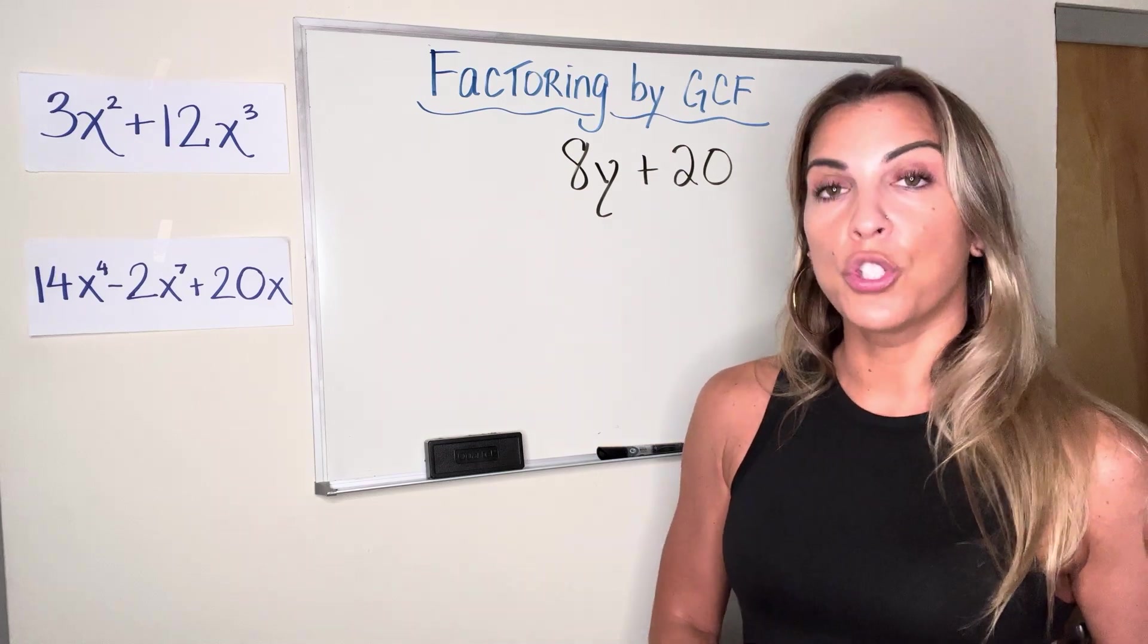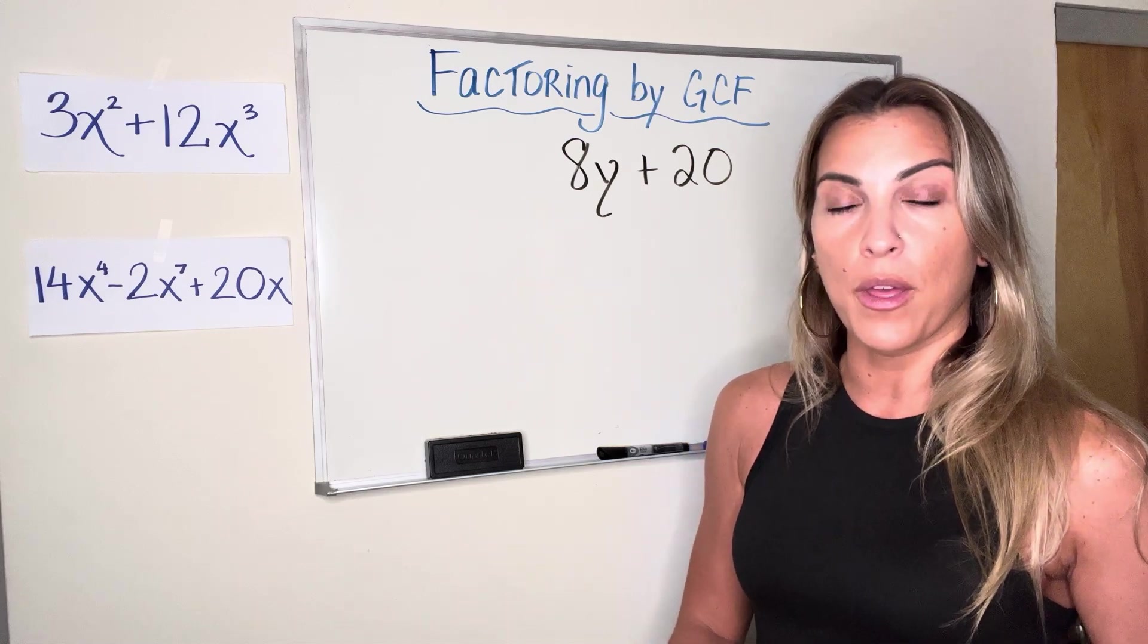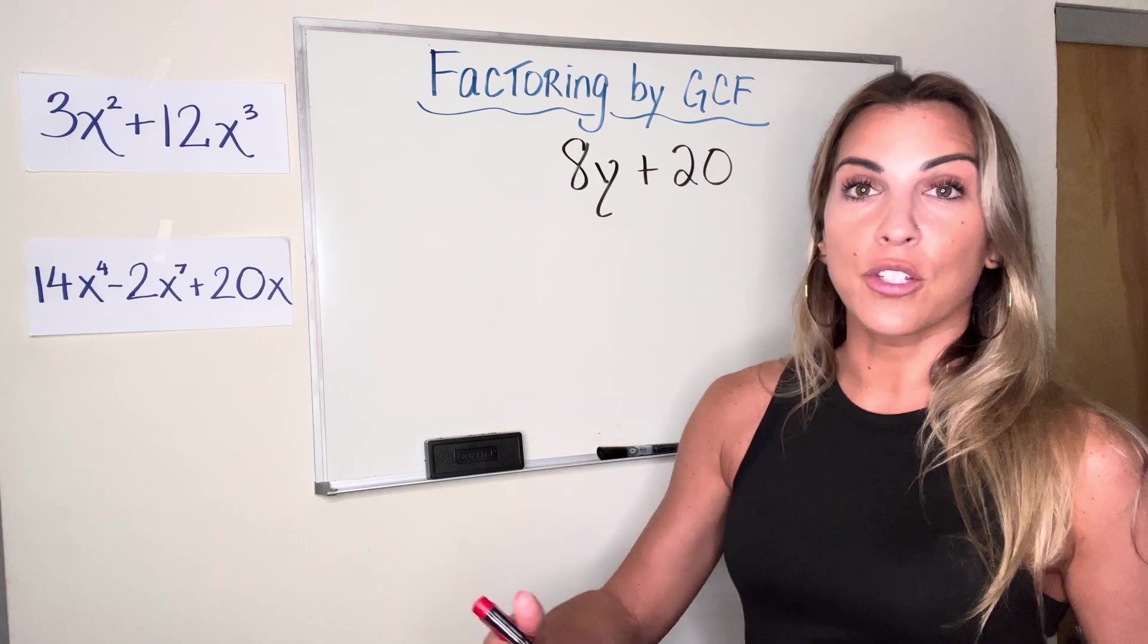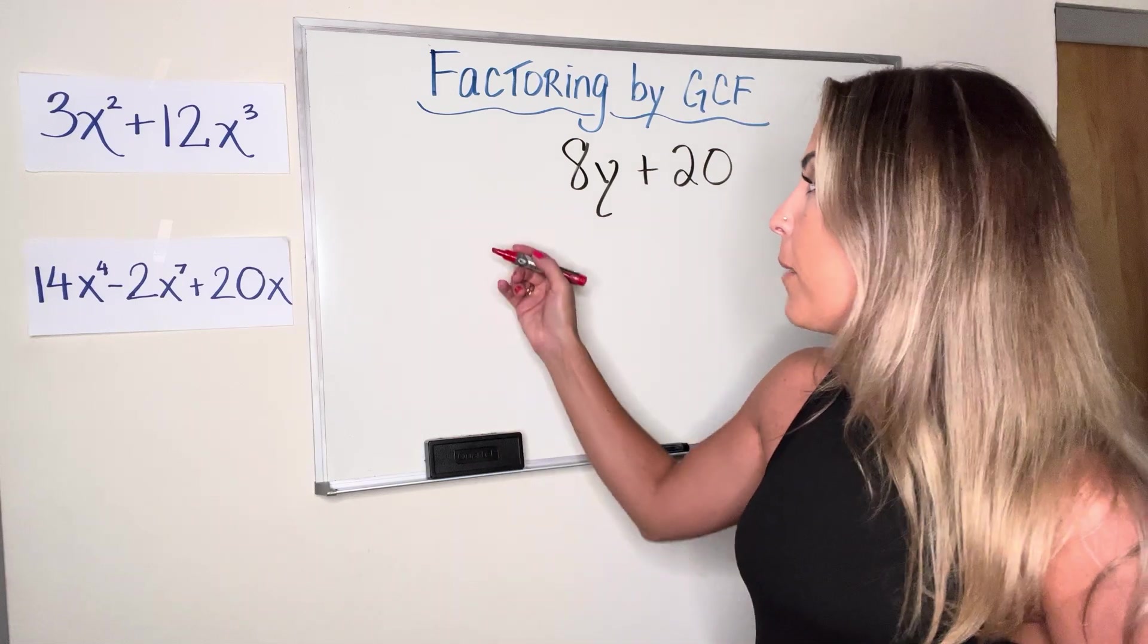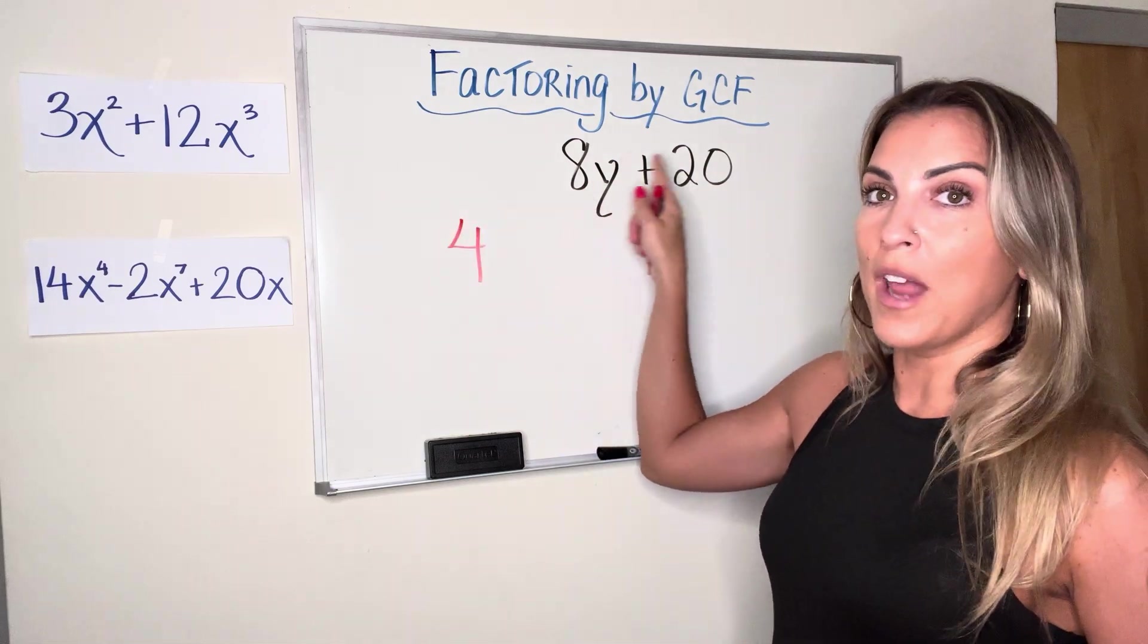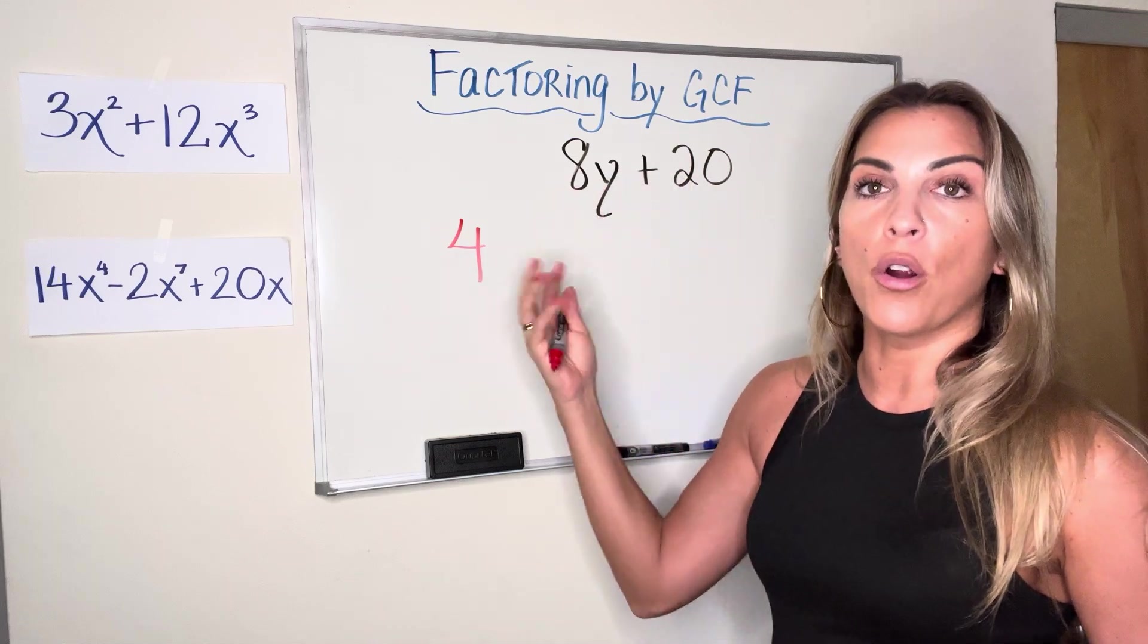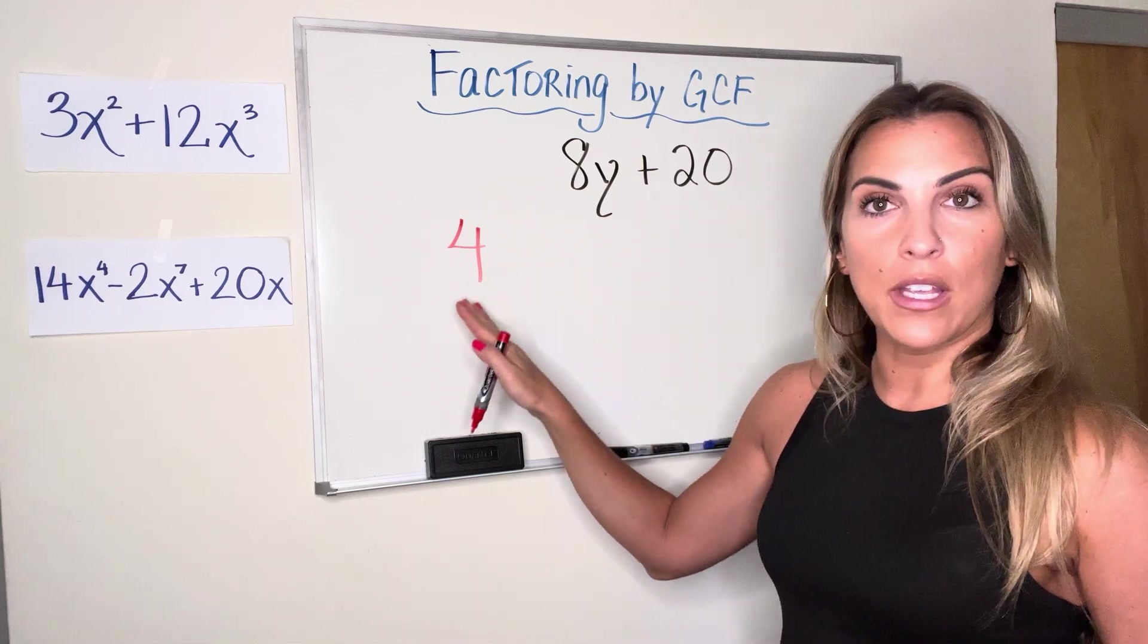If you said 2, 2 is a common factor for 8 and 20. It does go into both of them, but it's not the greatest one. So we're always looking to factor out the greatest common factor. And that in this case is 4. In this example, because both terms do not have a variable, only this one does, we can't have the variable be part of the common factor because it's not common. So our greatest common factor here is just 4.